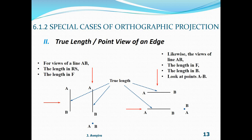Looking at point AB to the left and to the right, these are point views of the line. These views are special cases because from the normal orthographic views, the true lengths of these edges are provided and the point view is also provided.